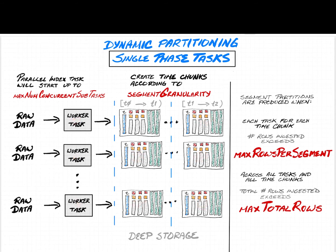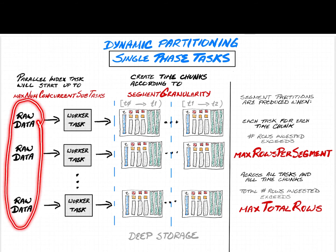There's another threshold called max total rows, which is more of a global checkpoint. It counts the total number of input rows processed across all tasks. When the max total rows threshold is reached, everything stops across all tasks — all accumulated time chunk partitions are output together to deep storage, all counters are reset, and the jobs continue ingesting more data.